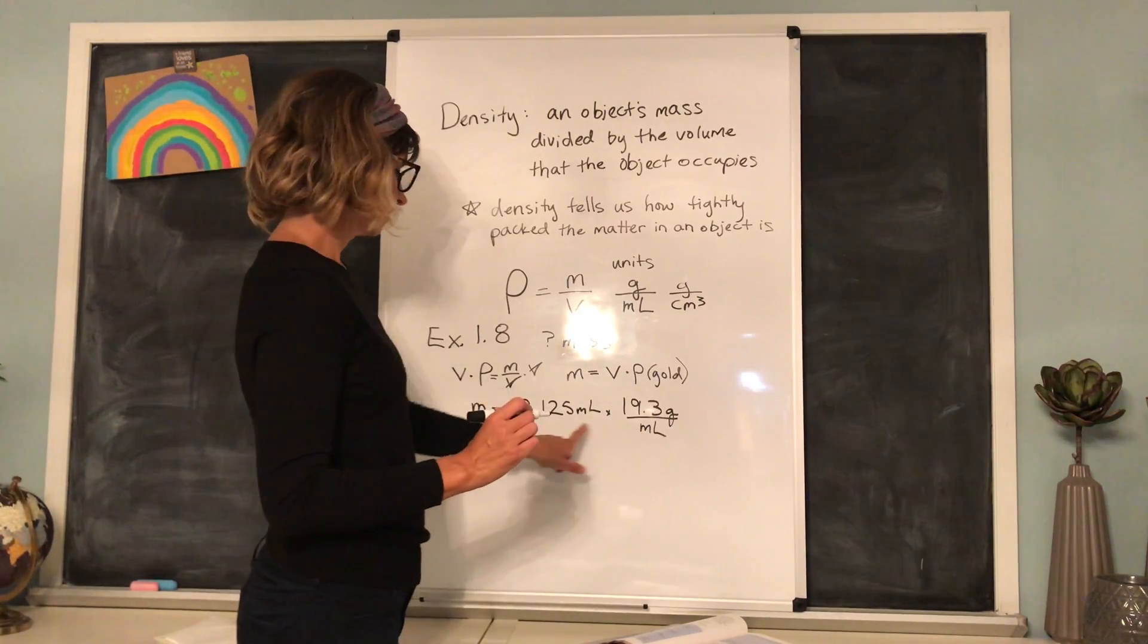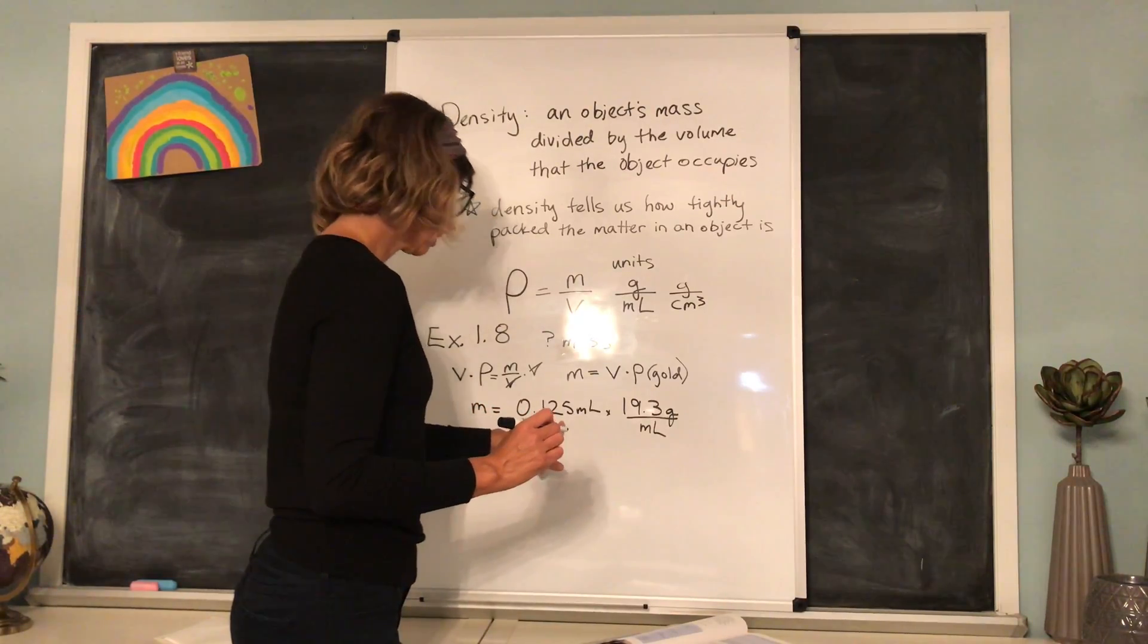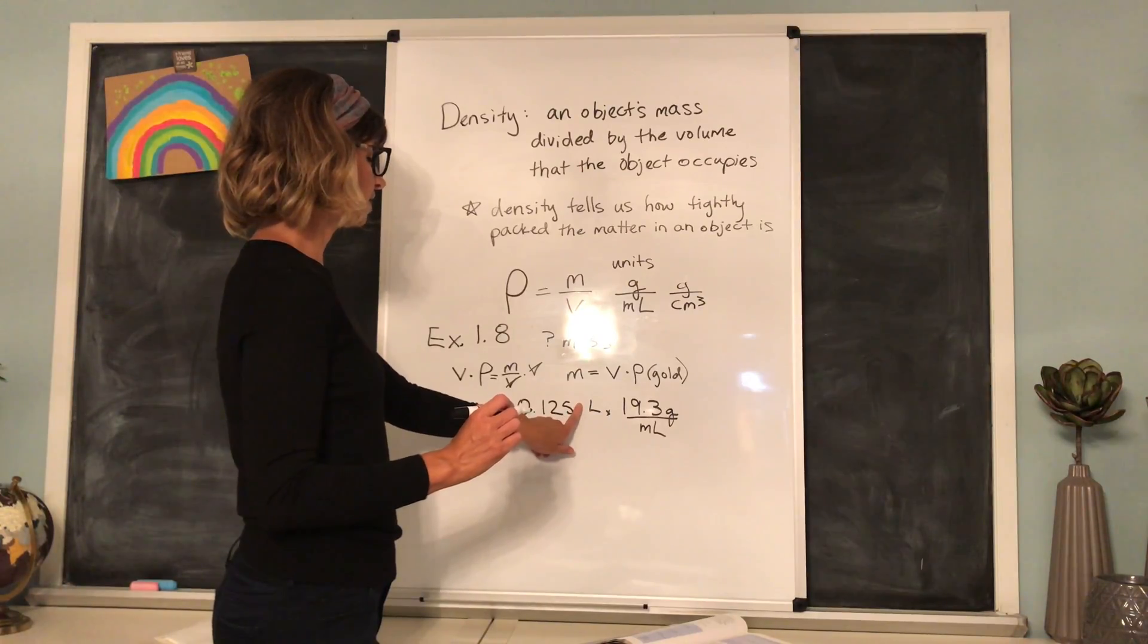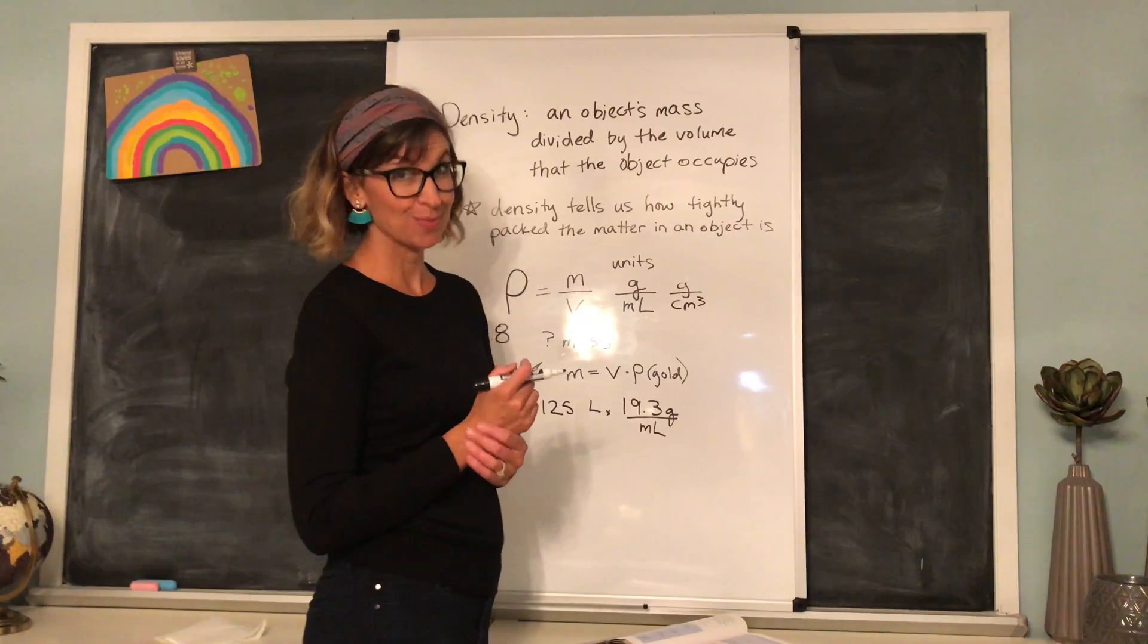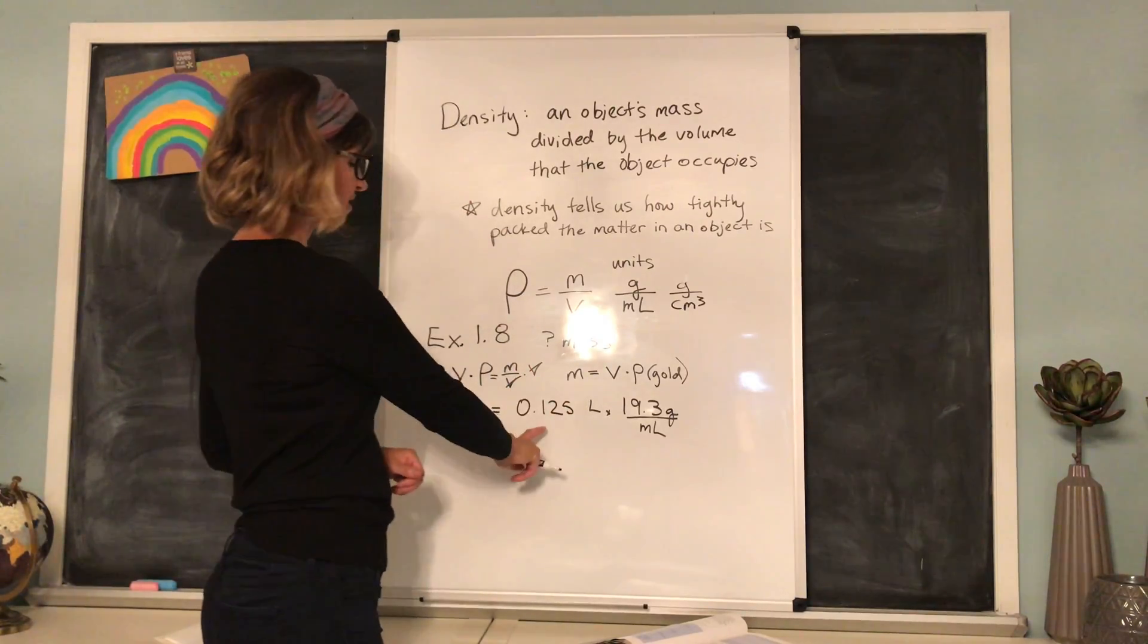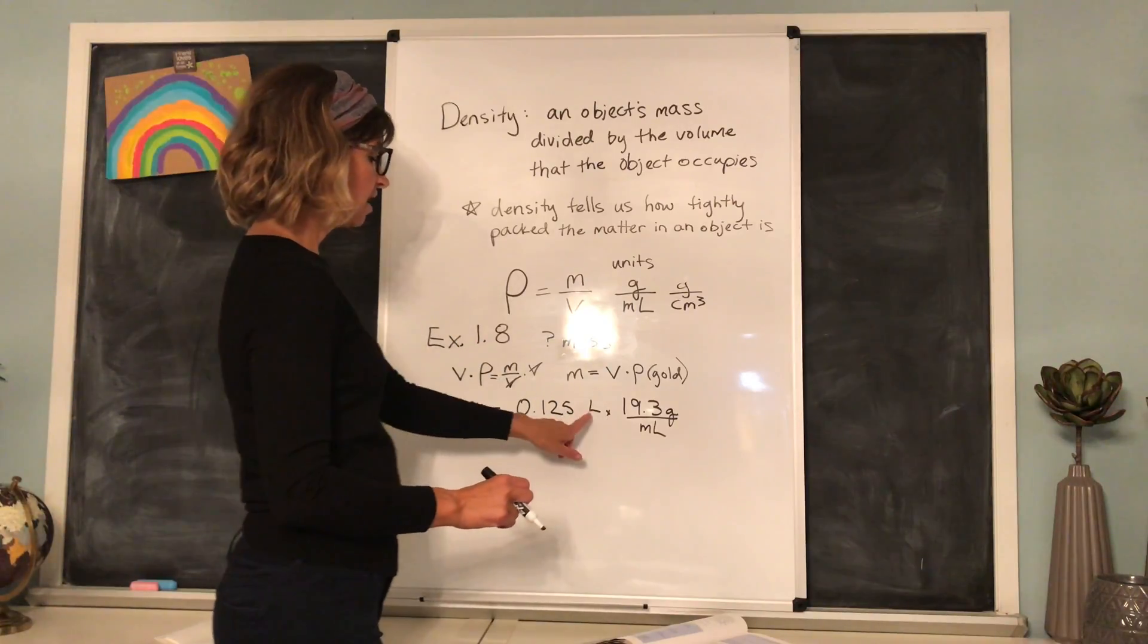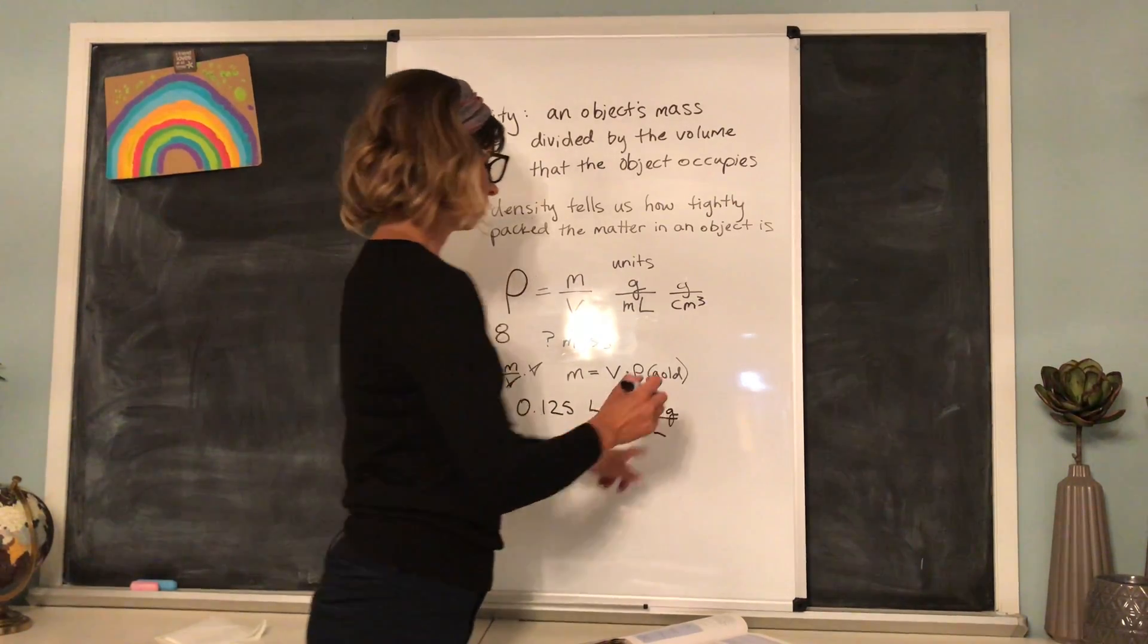Our units, I messed up right here. It was 0.125 liters. Sorry, not milliliters. And I caught it because I knew I was supposed to catch something. So the volume was 0.125 liters times the density. But liters and milliliters are not going to cancel each other off.